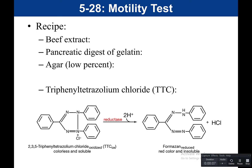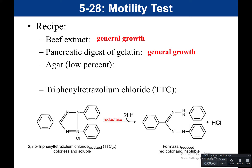Now we're going to look at our readout of our motility test — this will be day two. We need to talk first about what is in the motility agar. The name of the media is motility agar. If we look at the list of ingredients, we have beef extract, which is there as food for general growth — simply to support growth. We have pancreatic digestive gelatin, which is another word for peptones, and the peptones are there as food for general growth. We have agar, and the agar is a low percentage — 0.4% versus a standard slant, which would be 1.5%. So it's about a quarter of the concentration of agar.